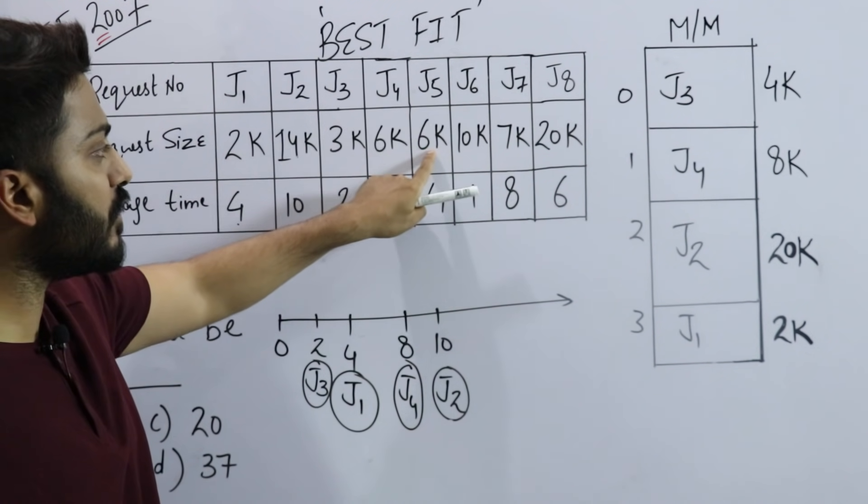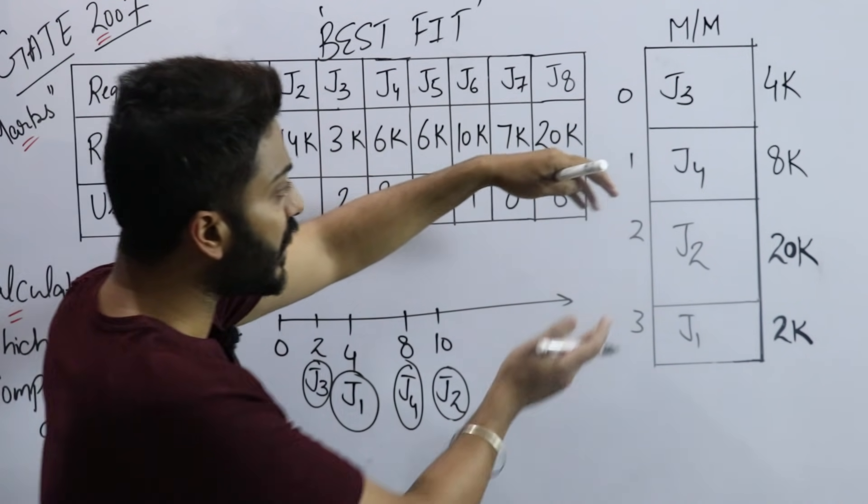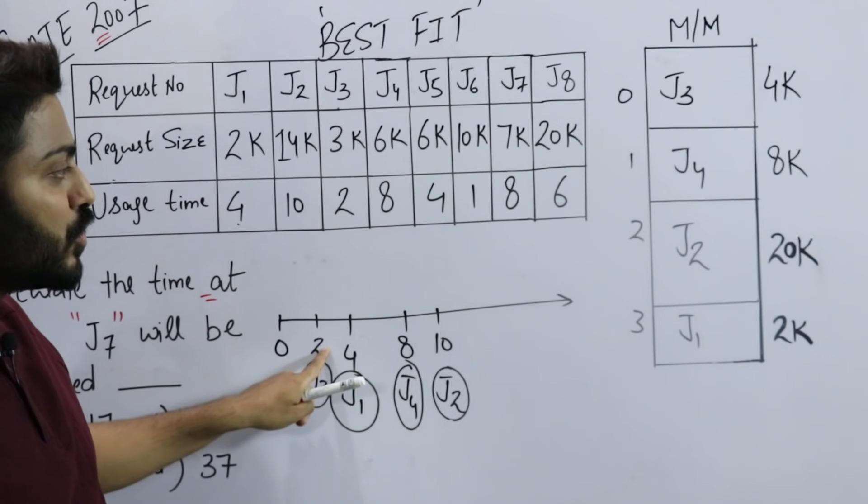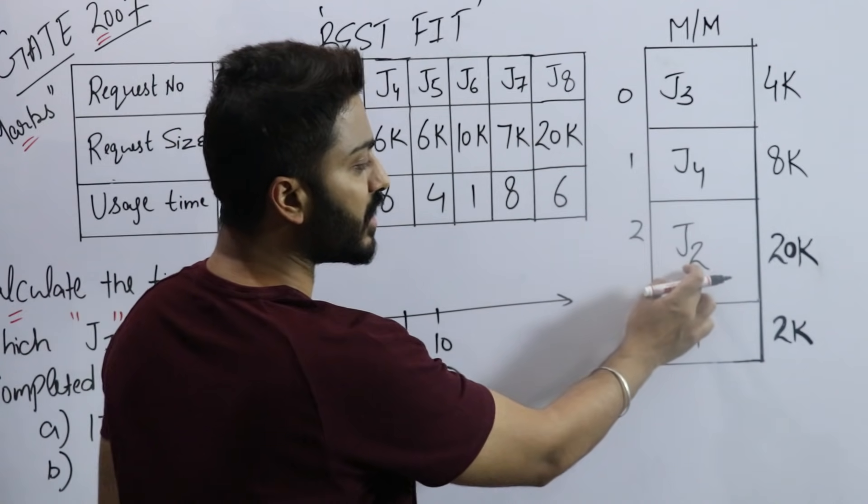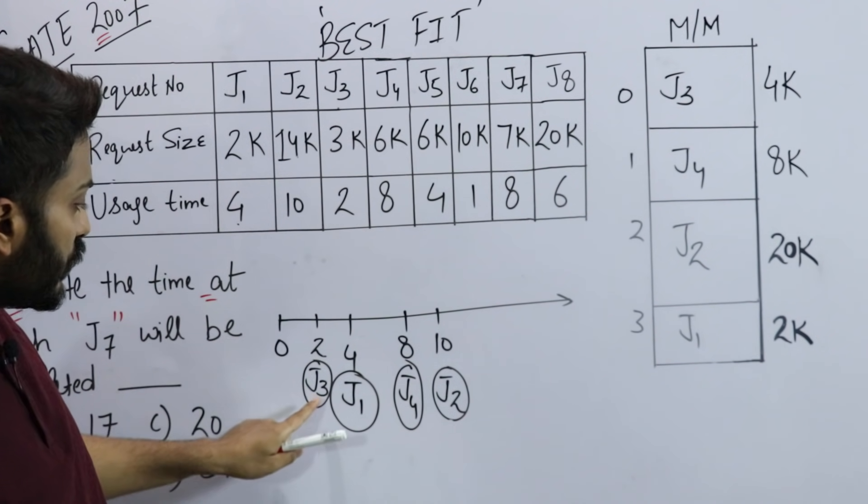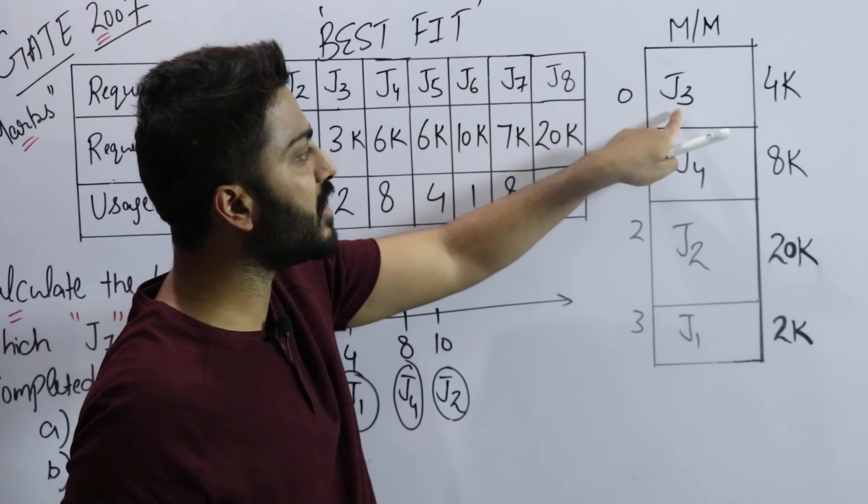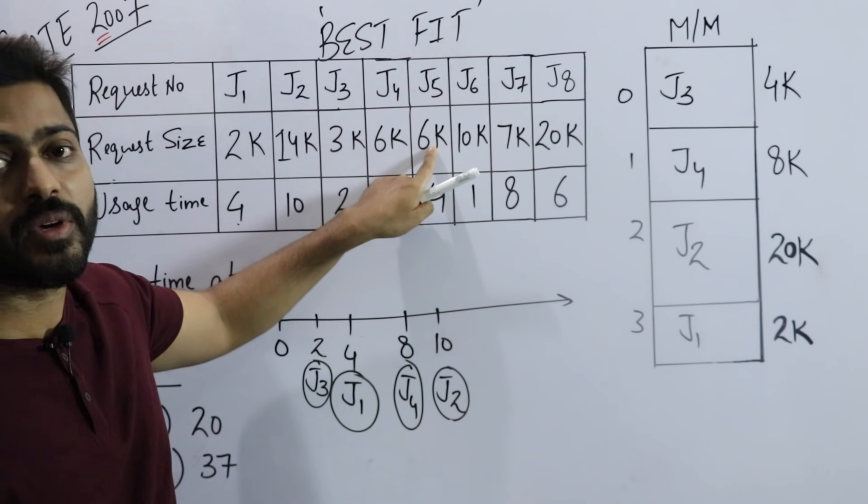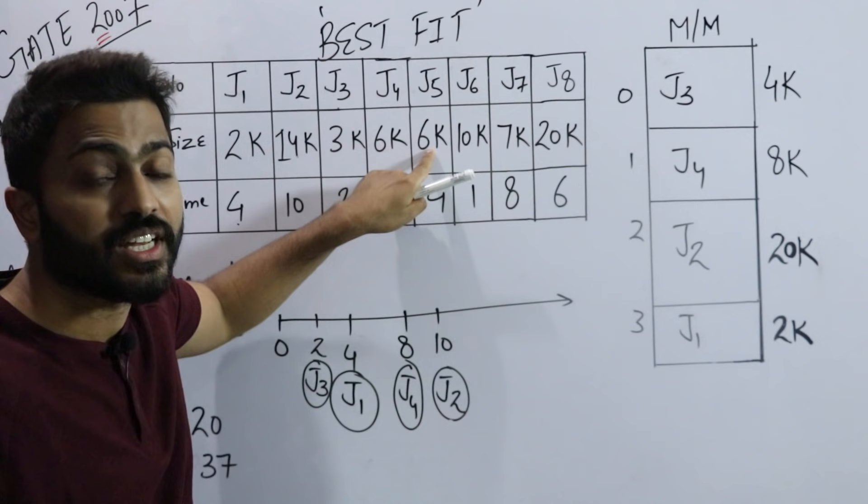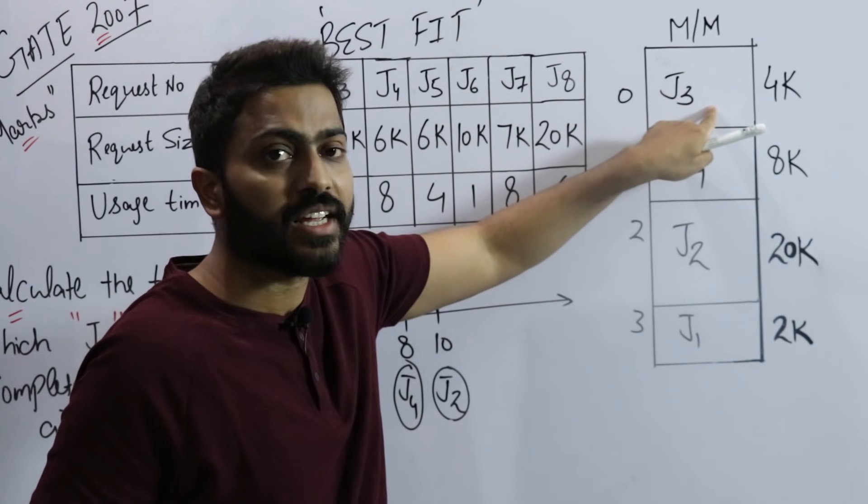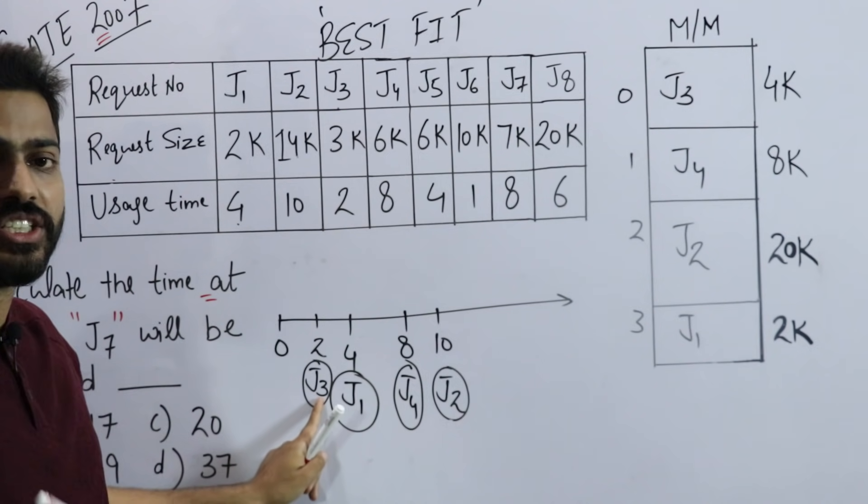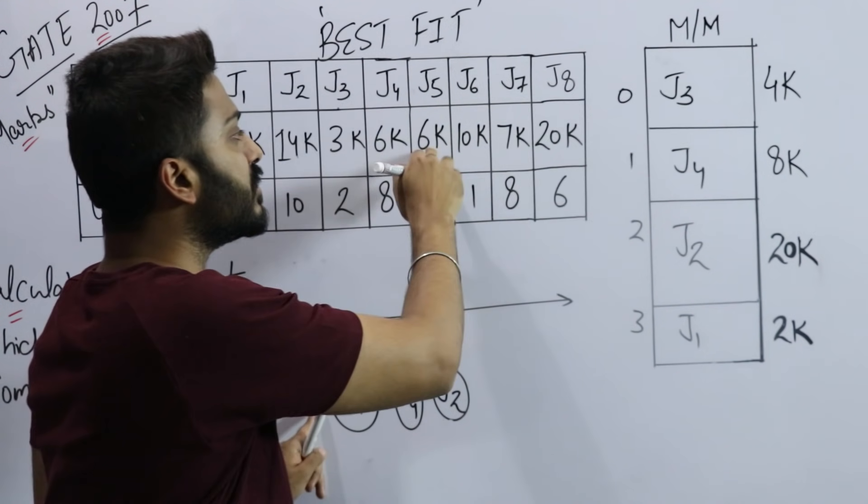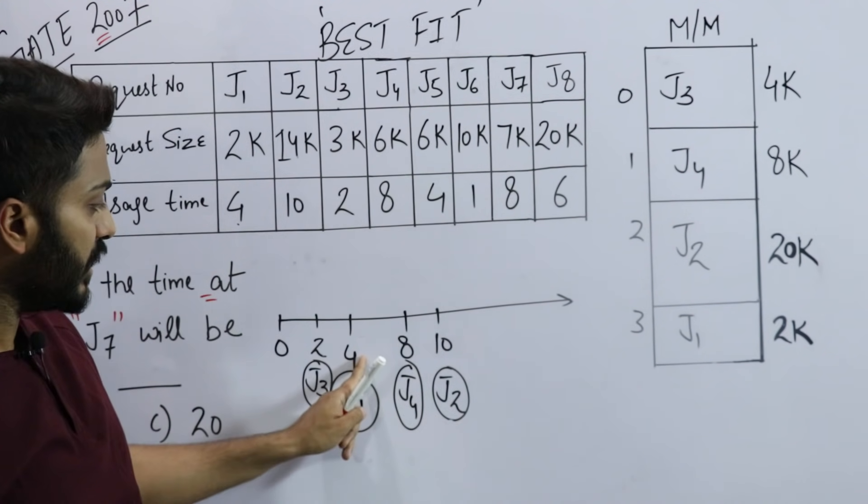Now came J5. J5 needs 6k memory. But which slot is free? None are free now. When time 2 comes, which slot will become free? J3 will exit at time 2. But even if J3 exits at time 2, I still cannot place J5 because the size of J5 is 6k and it won't fit in the 4k slot.